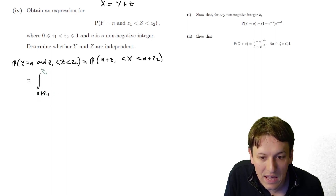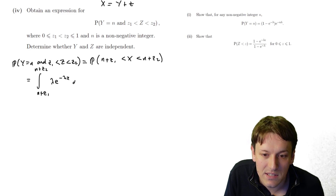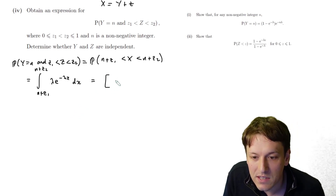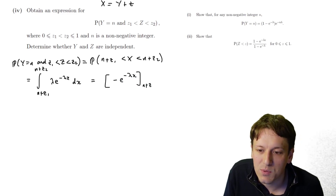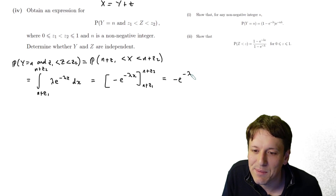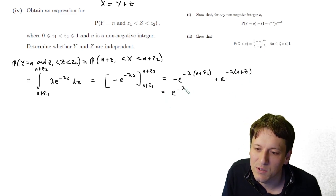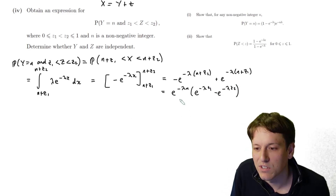Computing that integral: −e^(−λx) evaluated between n + z₁ and n + z₂ gives −e^(−λ(n+z₂)) + e^(−λ(n+z₁)). Factorising out e^(−λn), we get P(Y = n, z₁ < Z < z₂) = e^(−λn)(e^(−λz₁) − e^(−λz₂)).